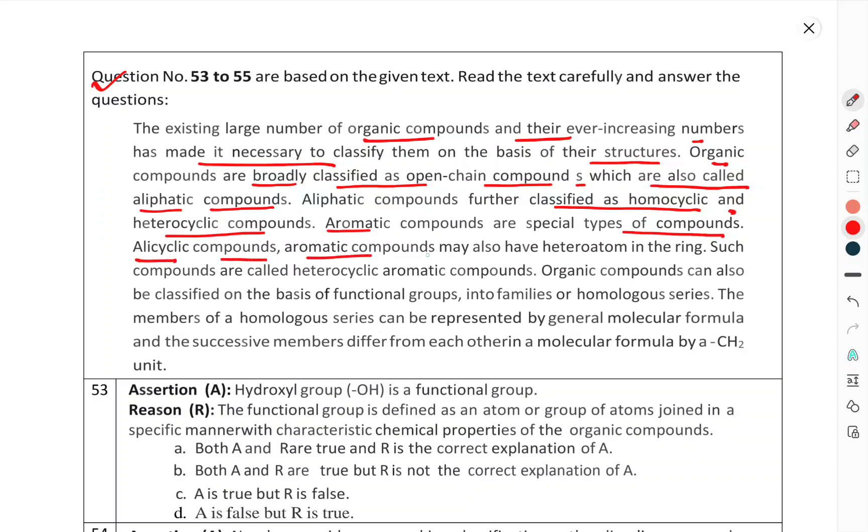Alicyclic compounds. Aromatic compounds may also have hetero atoms in the ring. Such compounds are called heterocyclic aromatic compounds. Organic compounds can be classified on the basis of functional group into families of homologous series. The members of a homologous series can be represented by a general molecular formula, and successive members differ from each other in molecular formula by a CH2 unit.